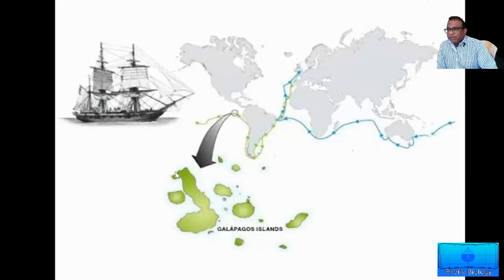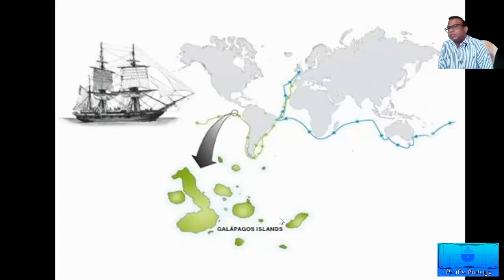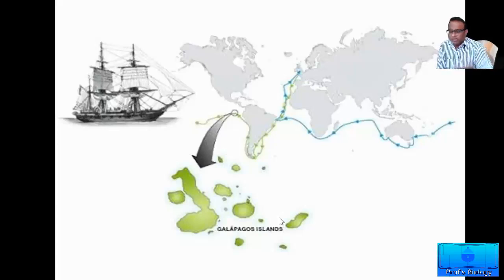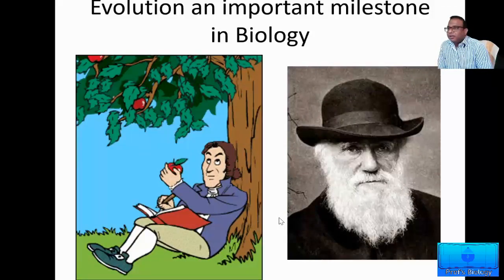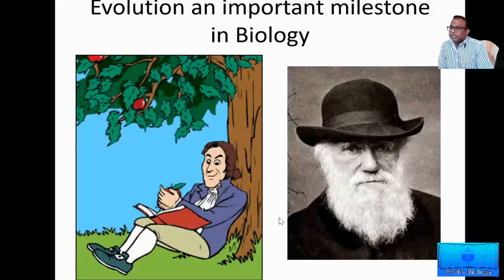While on this voyage, the ship also came to a group of islands called the Galapagos Islands. When Darwin arrived at these Galapagos Islands, he saw something interesting there which made him think about the process of evolution and discover it. Today's class is just an introductory class to evolution and we will understand how life originated on planet Earth. The discovery of evolution by Charles Darwin became one of the milestones in the study of living organisms or biology.